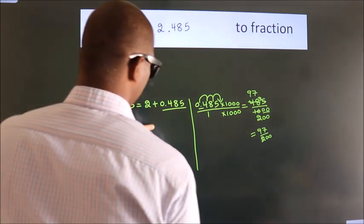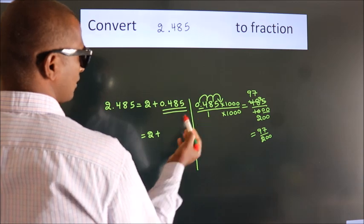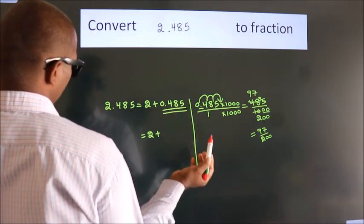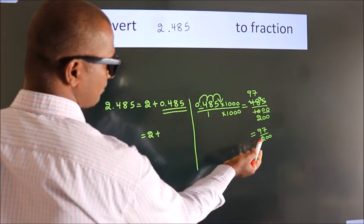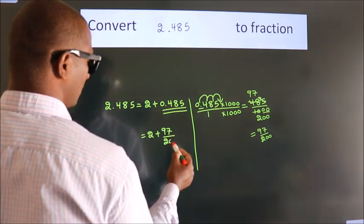Now we have here 2 plus, in place of 0.485, now we write this fraction 97 by 200.